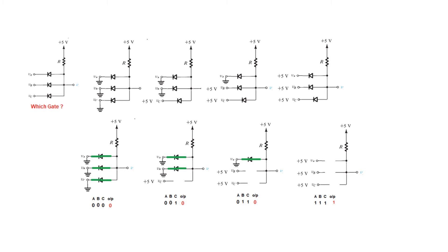These two are grounded, so this terminal will be at ground. VC is 5V but the output is still connected to ground, so the output will be zero. In the third case, one input is grounded (zero) and the other two are one — so inputs 0, 1, 1 — and because of the grounded one, the output is zero.